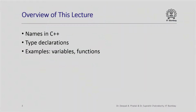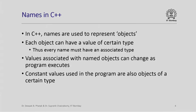This is the overview of this lecture. We are going to look at how names are given to different objects in C++. We are going to have a very high level overview of type declarations and how these are indicated in a C++ program, and we will illustrate these through names and declarations of variables and functions. In C++ there are different kinds of computational objects and names must be used to represent these objects. Each object typically can have a value of a certain type, and so we must also associate a type with every named object in a C++ program.